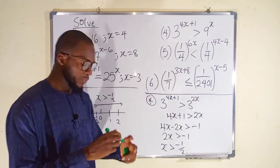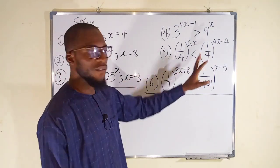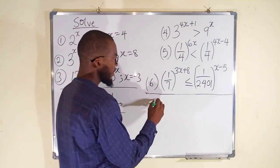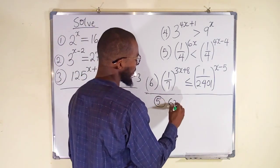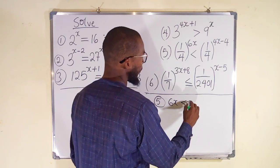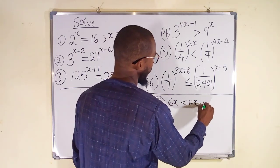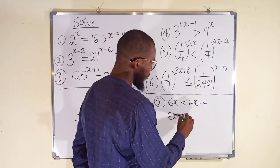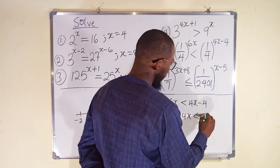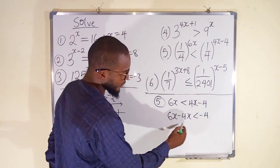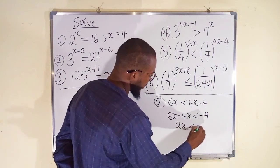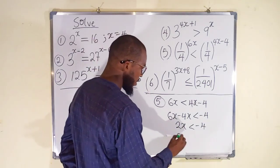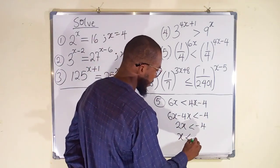Let us take the next one — number 5. We already have common bases, so we can go directly and relate the powers. We have 6x less than 4x minus 4. Bringing 4x to the left: 6x minus 4x is less than negative 4. That gives 2x less than negative 4. Dividing both sides by 2: x is less than negative 2.